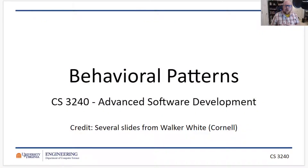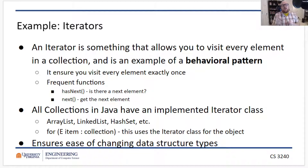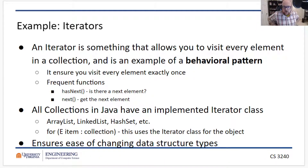Behavioral design patterns relate to how classes interact or how certain functionalities are performed. An example of this are iterators. Iterators are a design pattern. Whenever you're looking at a collection, it's a very common practice to say you want to visit every element in that collection exactly one time, whether that's a list, a map, a set, or a tree. We often use iterators to make sure we visit every element exactly once. That's the nature of the iterator design pattern.